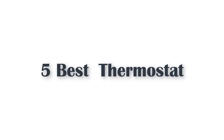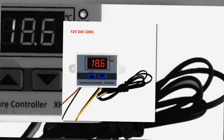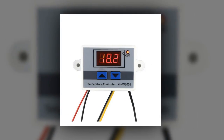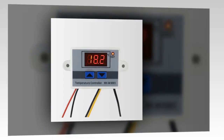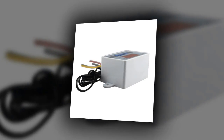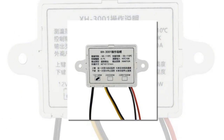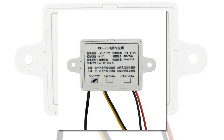5 best thermostats. Here is product number five: MN-5110C intelligent digital thermostat. Output type: direct output. Output capacity max 10A. Appearance size 60×45×31 millimeters. Temperature measurement range -50 to 110 degrees Celsius. Temperature control range -50 to 110 degrees Celsius. Temperature control precision plus or minus 0.1 degrees Celsius.